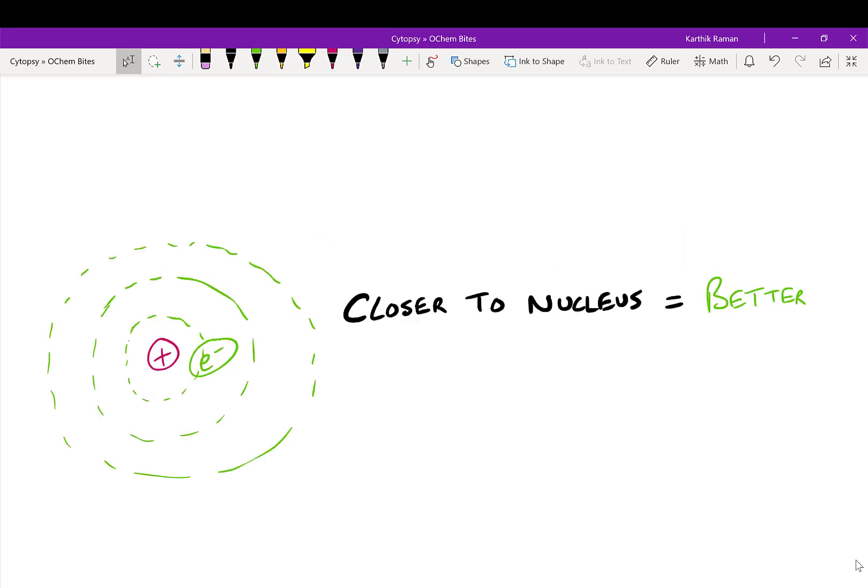All right, so the key is that electrons want to be as close to the nucleus as possible. They tend to fill up slots that are as close to the nucleus first, and slowly they'll go further and further away as you add more and more electrons. Remember, closer to the nucleus is better.